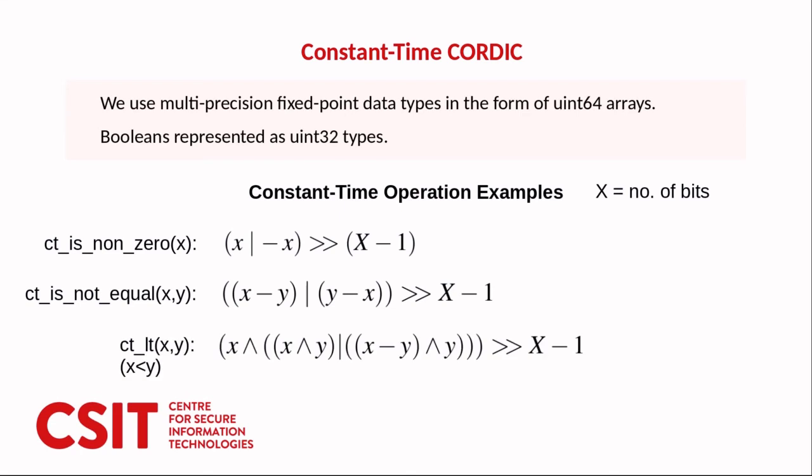For the less than function we have that we xor x and y to see if their most significant bits are equal. We or this value with whether y and x minus y have equal most significant bits and this gives us a most significant bit which must be different from that of x if x is less than y.